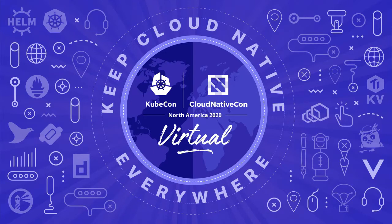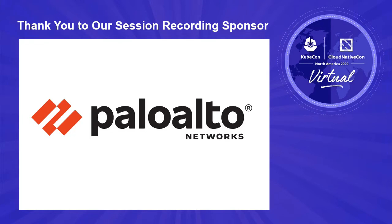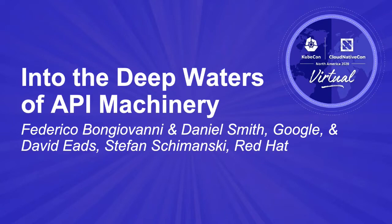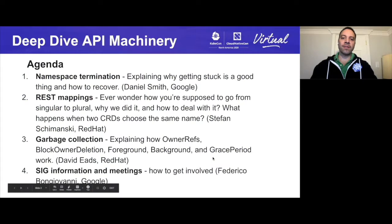Hello Kubernetes community. Welcome to our SIG API Machinery deep dive session. My name is Federico Bongiovanni and I am the co-chair of SIG API Machinery. Our agenda today will have three topics and a small bonus information at the end. Our first topic is going to be namespace termination and Daniel Smith from Google is going to walk us through it using his signature handmade presentation style.